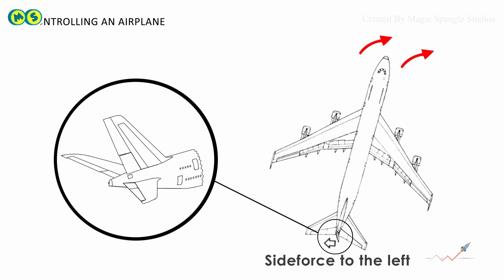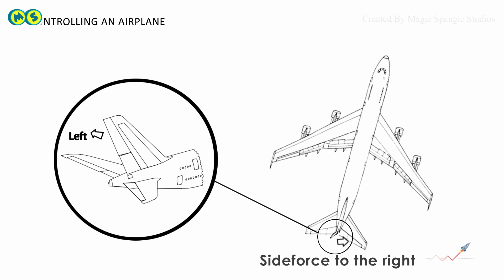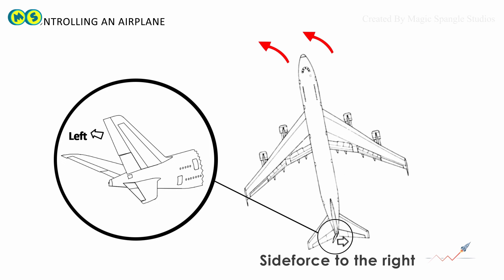If the rudder is deflected towards the left, it creates a side force to the right, which causes the nose to yaw to the left.